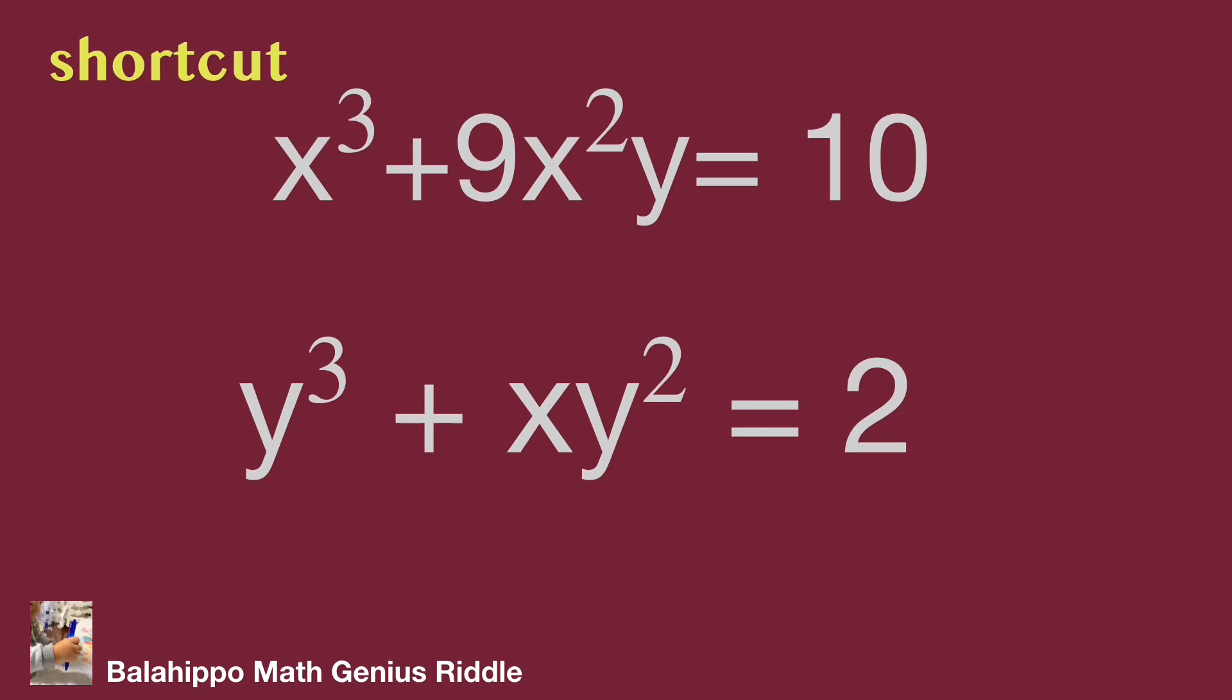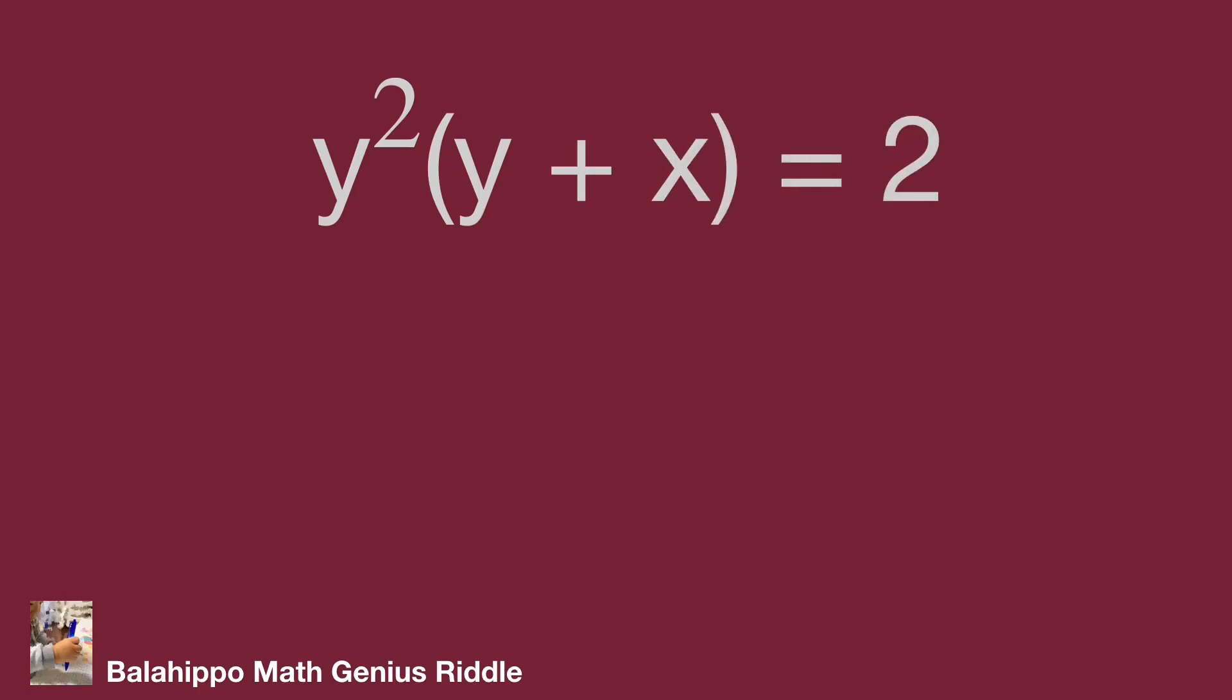Let's go for the second approach. I call it shortcut. Look at the second given equation: y cubed plus xy squared equals 2. The number 2 is an easy to handle item. And we find y squared is a factor on the left side of the equation. Then we transform the equation as y squared multiplied by quantity y plus x equals 2. Where two items multiplied equal to 2 and both of them are integers.